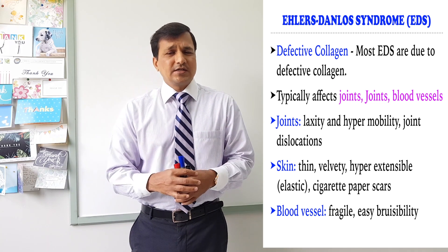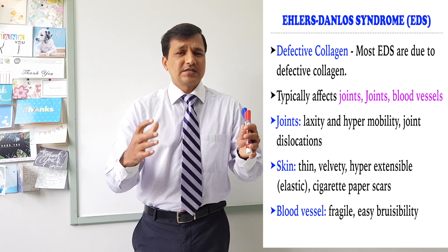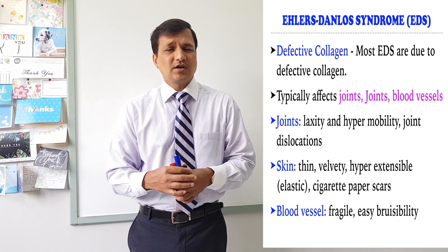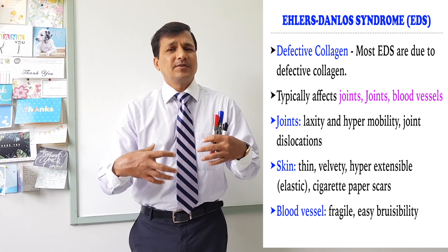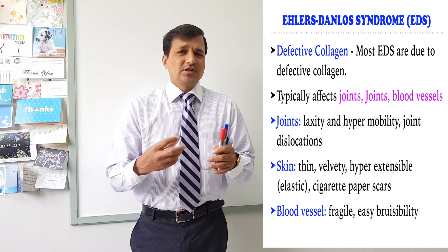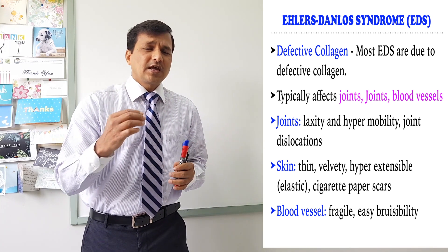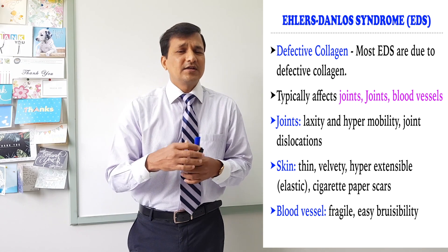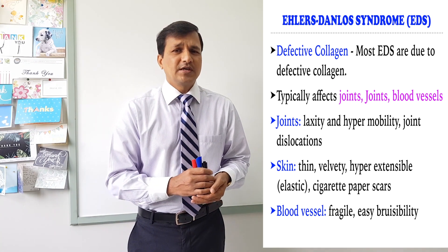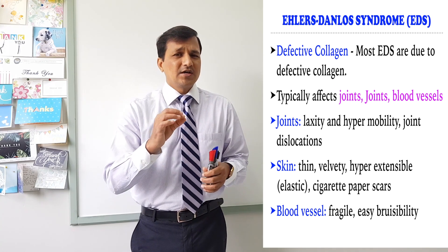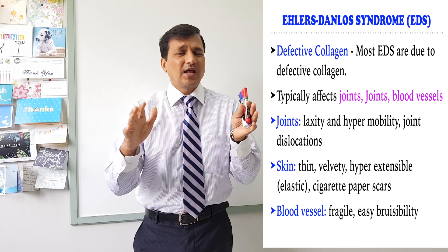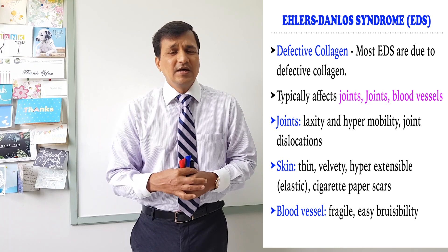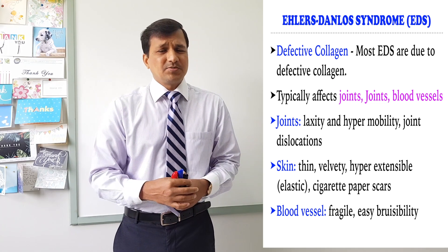The skin is also affected in EDS. Hyperelasticity of the skin is a common feature — the skin is dramatically elastic and very thin. If there is an injury to the skin, it heals by fibrosis, producing a characteristic scar referred to as a cigarette paper scar, which has a thin, velvety appearance. There can also be stretch marks.